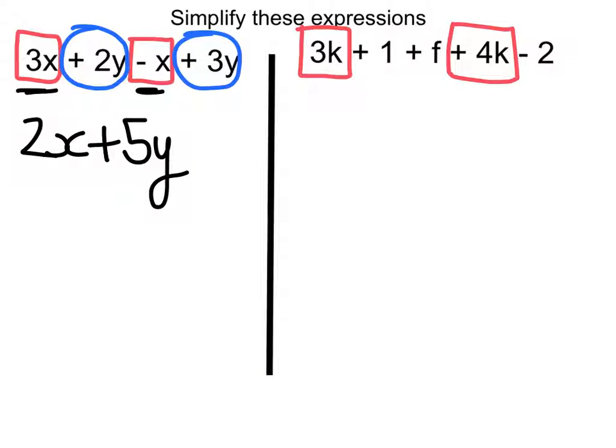And I have number terms, or constant terms we call them. So we've got plus 1 minus 2, so they are in blue circles. And I'm going to do a plus f. There's only one of those. I'm going to put a black circle on that one.